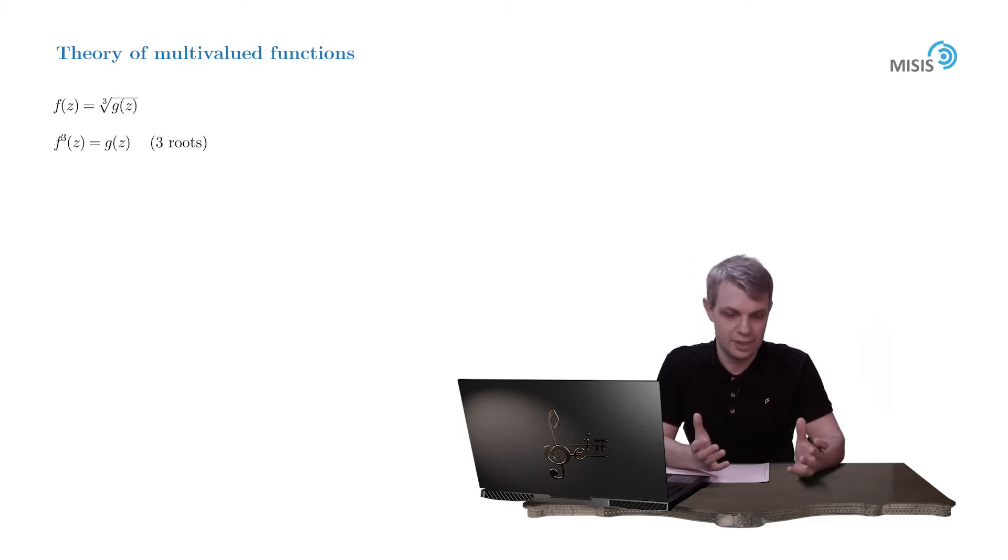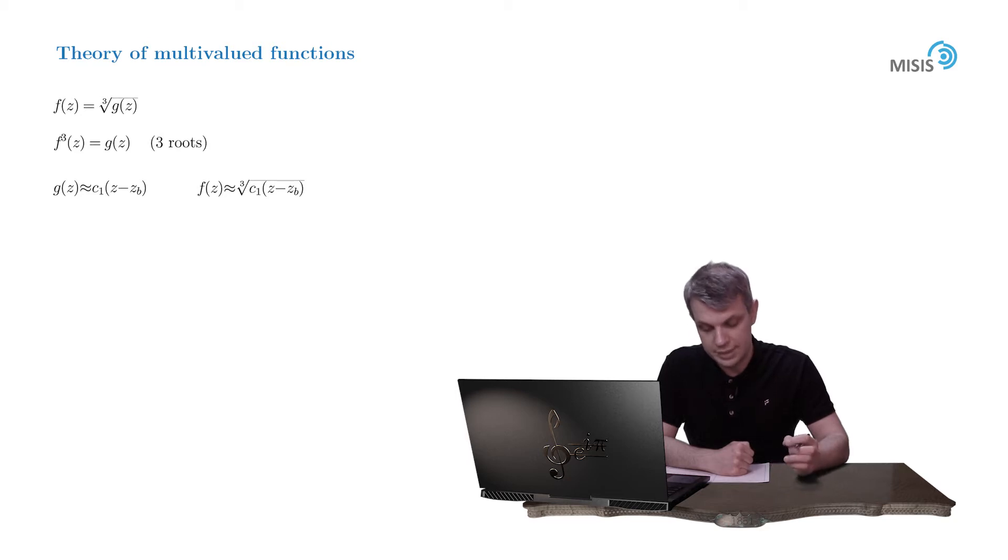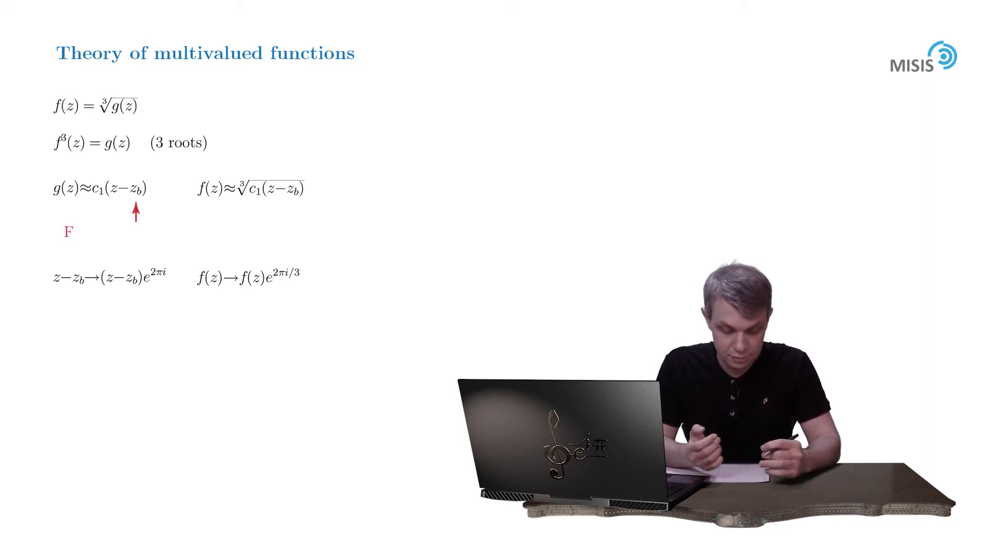So suppose g of z has some simple root, like a first-order root at some point z sub b. Then to investigate its structure in the vicinity of this point, we may Taylor expand it and retain only the first-order term. So g of z is equal to c1 times z minus z sub b. Then f function is also drastically simplified. And we see, once we make a rotation around point z sub b along the small circle, the f function changes accordingly. So even the infinitesimal rotation around this point makes the function multi-valued. So this point, in this case it's our first-order root, makes a function multi-valued, and we should start a branch cut right here.